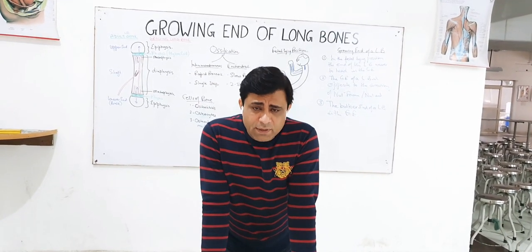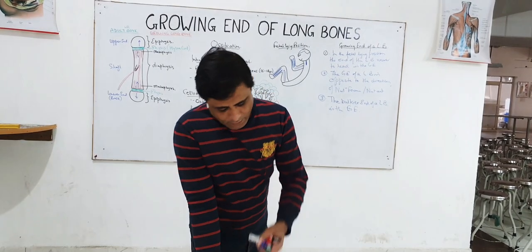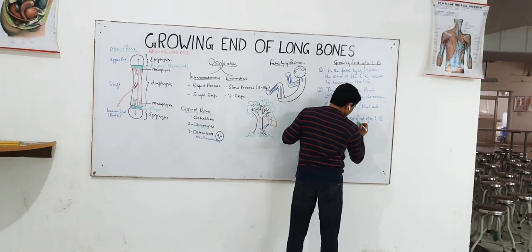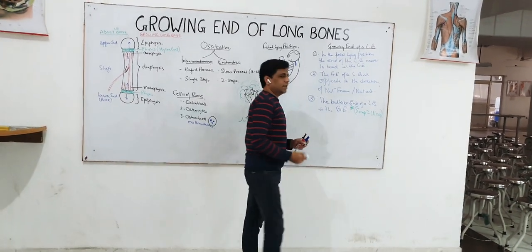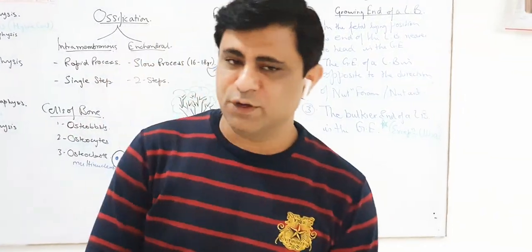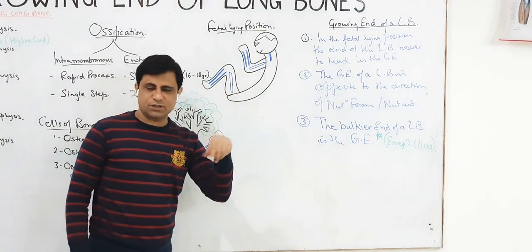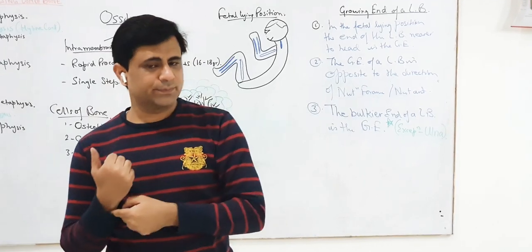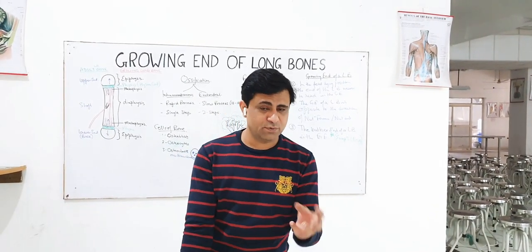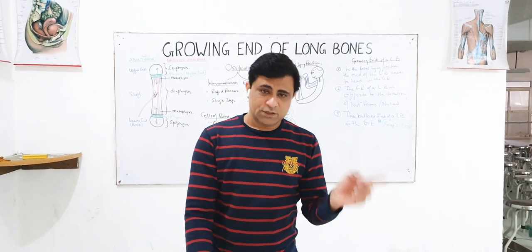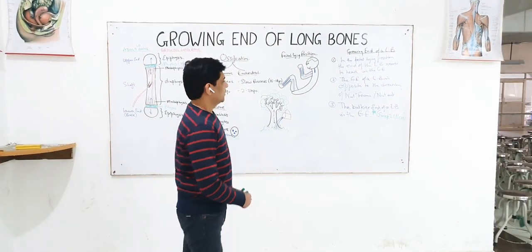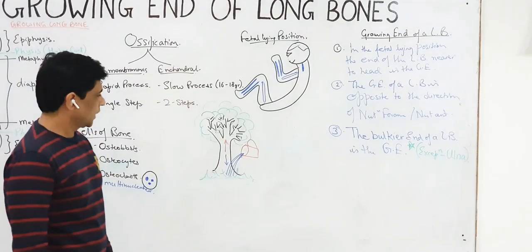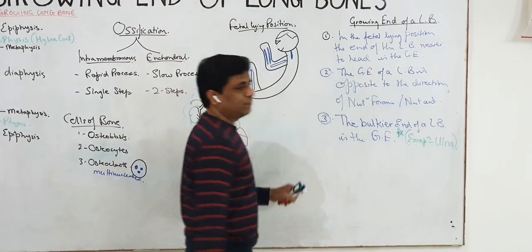There is an exception to criteria three, and that is the ulna. The growing end of ulna by criteria one should be the distal end — toward the head in fetal position — but the proximal end of ulna is bulkier, with the coronoid process, olecranon process, and trochlear notch. So ulna does not follow the bulkier-end criterion. The reason for this needs to be explained through the types of epiphysis.